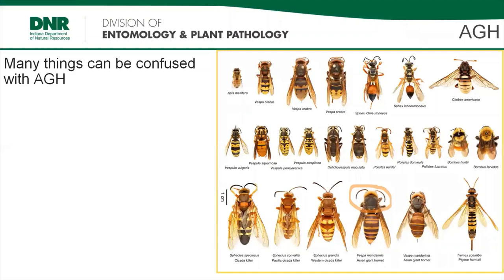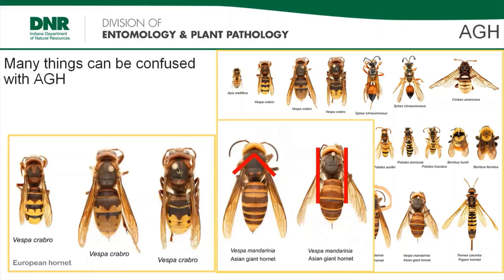There are a number of larger insects often confused with AGH. Native cicada killers are sometimes thought to be AGH based on their size, but the banding on the cicada killer's abdomen is much more yellow and black, and the cicada killer head is smaller than the thorax. There is another introduced Vespa species found in the U.S. — the European hornet — which can be difficult to distinguish from AGH in flight. When looking at the abdomen, the markings are very different: AGH has a banded abdomen, while European hornets have an almost teardrop pattern. European hornets can be slightly smaller than their cousins, but also have very powerful stings.